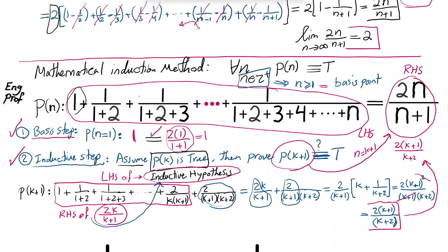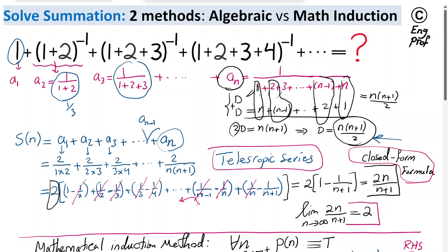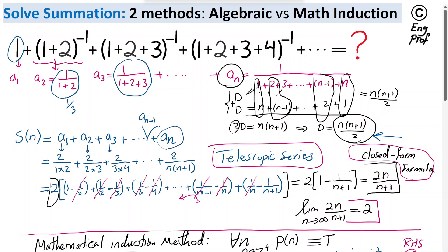Therefore, by mathematical induction, for all n, p of n is true — since we proved both the basis step and the inductive step. I hope this example is helpful in showing how to attack both the finite and infinite version of a summation using the algebraic method and mathematical induction. Thanks for watching.